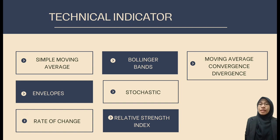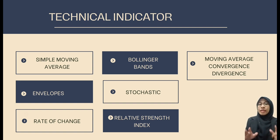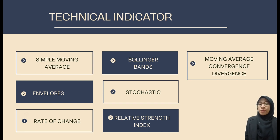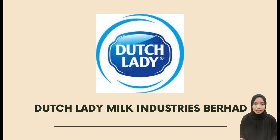For the technical analysis indicators, we use 7 types: Simple Moving Average (SMA), Bollinger Bands, Moving Average Convergence Divergence (MACD), Rate of Change (ROC), Relative Strength Index (RSI), Stochastic, and Envelope Indicator on the chart. Dairy goods are manufactured and distributed by Daslady Industry Berhad.